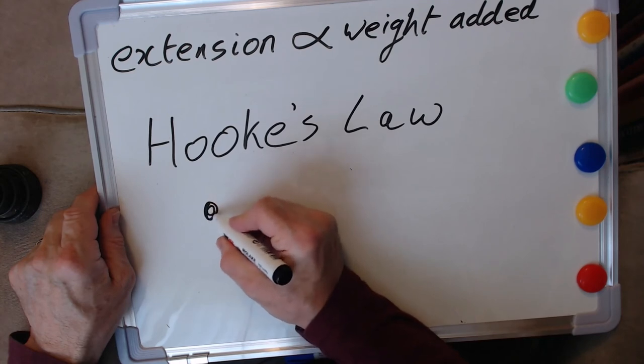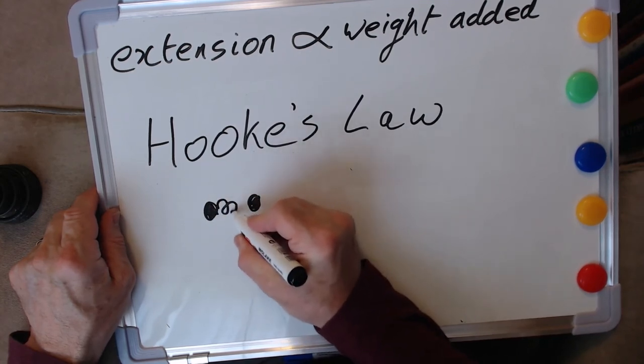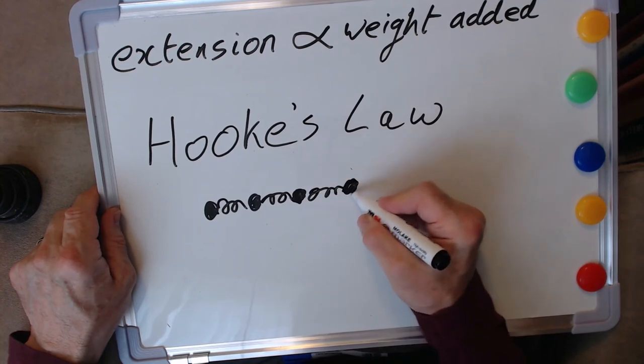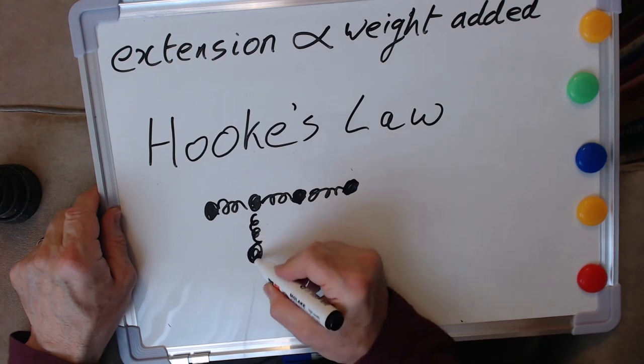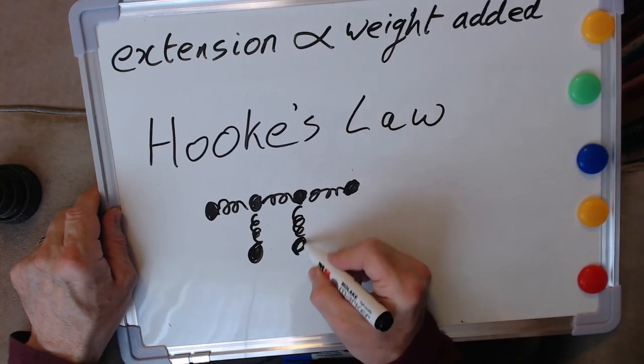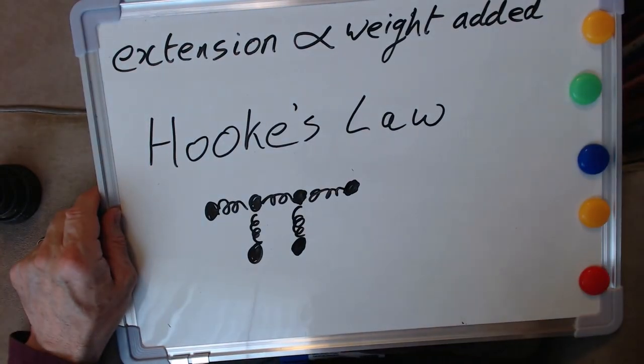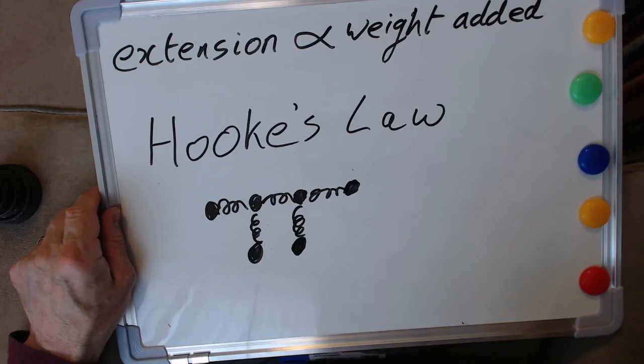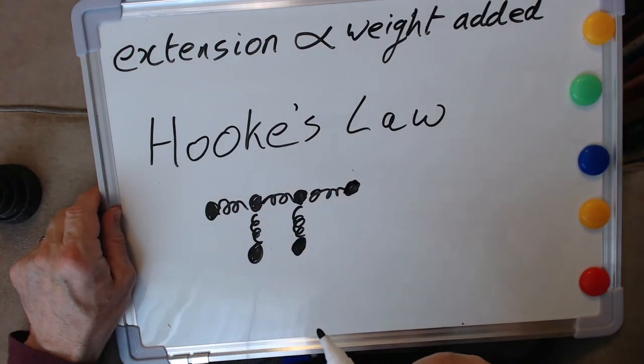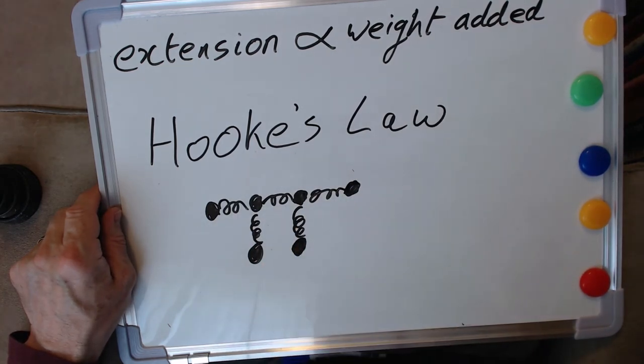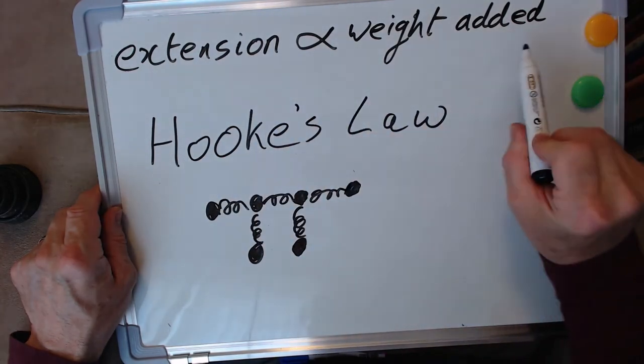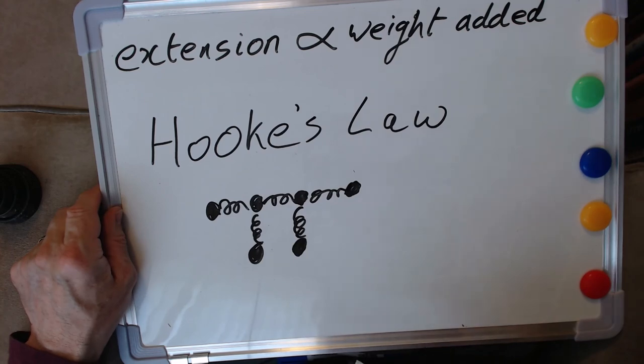Hooke's Law comes about at this big scale, the scale of elastic bands and springs, because the individual atoms that make up our material are themselves connected by things that are behaving like springs. We've got all our atoms in the system, and they're all in three dimensions of course, connected by things that behave like springs. They have an extension that is proportional to the work that we're putting in to either compress them or stretch them. If our material is composed of atoms or molecules that are all held together like this, then it's no surprise that the material as a whole is going to behave in exactly the same way.